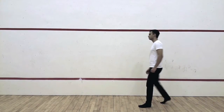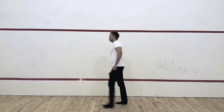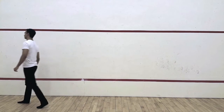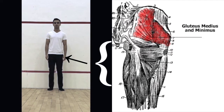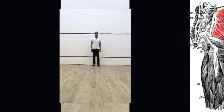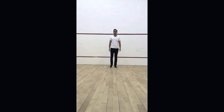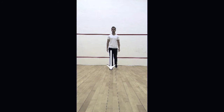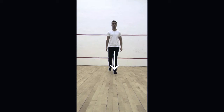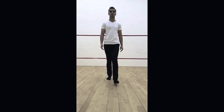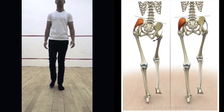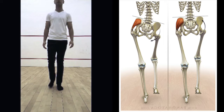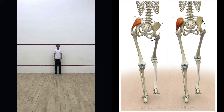The Trendelenburg gait is an abnormal gait caused by weakness of the abductor muscles, namely gluteus medius and minimus. In a normal patient, the body weight is evenly distributed between both legs when standing. When walking, all the weight is transferred to one leg intermittently and then the next, thus causing a shift in the center of gravity. To compensate for this, the hip abductors on the ipsilateral side contract, thus keeping the pelvis stable.